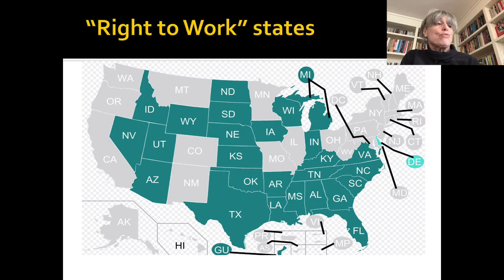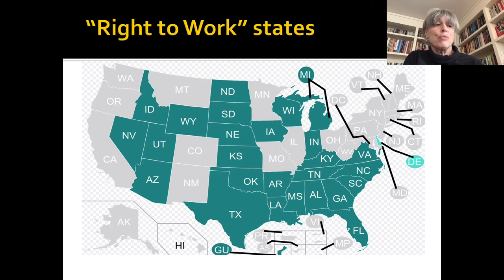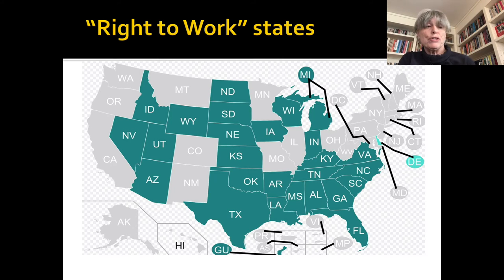Another thing that's changed is that right-to-work laws — which are not what they sound like — are laws that prohibit union shops. Union shops are workplaces where workers are represented by the union more or less automatically under the terms of the collective bargaining agreement. Those are illegal in right-to-work states, and those states are now a majority — 26 right-to-work states, up from 20 as recently as 1975. Legendary union strongholds like Michigan and Wisconsin are now right-to-work states.